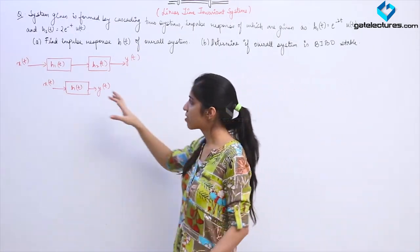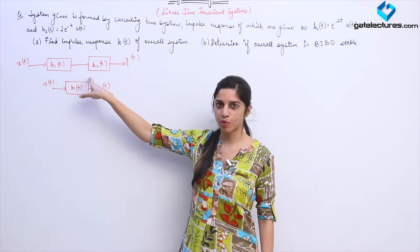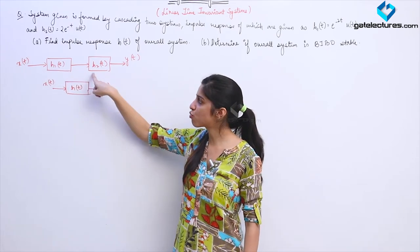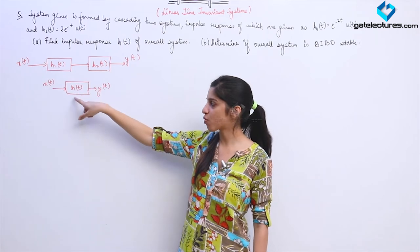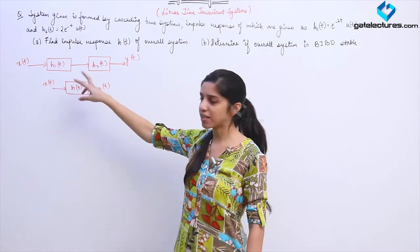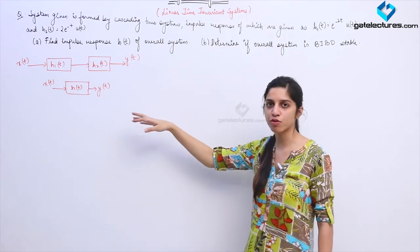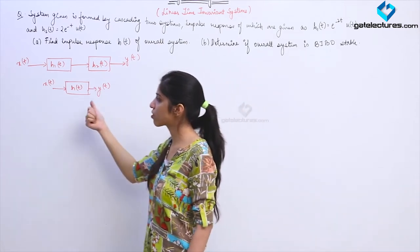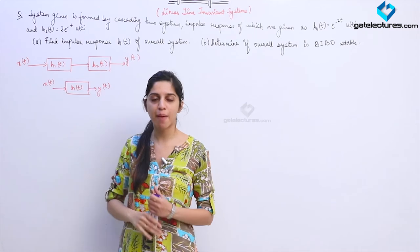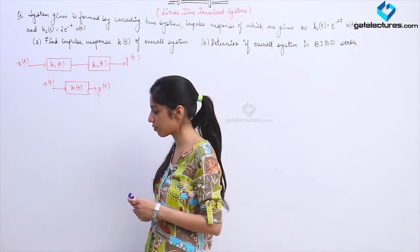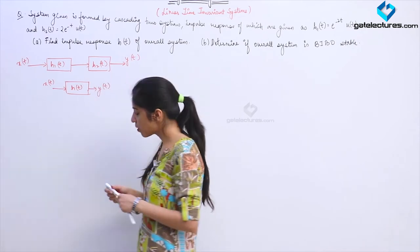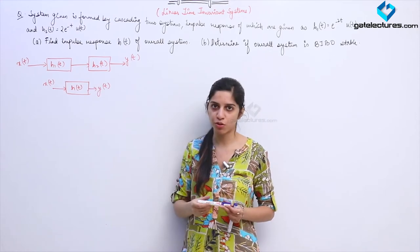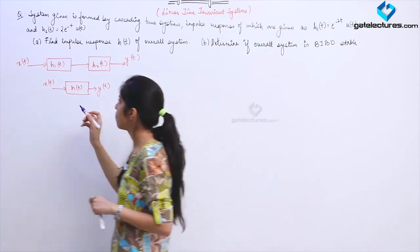Now a new system is formed by cascading two different systems with individual impulse responses h1(t) and h2(t), forming a single combined system with impulse response h(t). They are asking for the combined impulse response and also for the stability of the system. Once we find the impulse response we can check stability by verifying whether it is absolutely integrable.